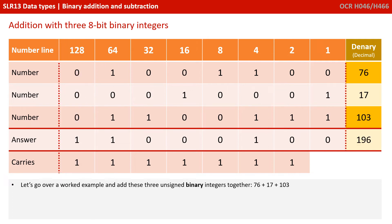We now add up each of the columns from our answer that have a 1 in it: 128 plus 64 plus 4, and our decimal value is 196.